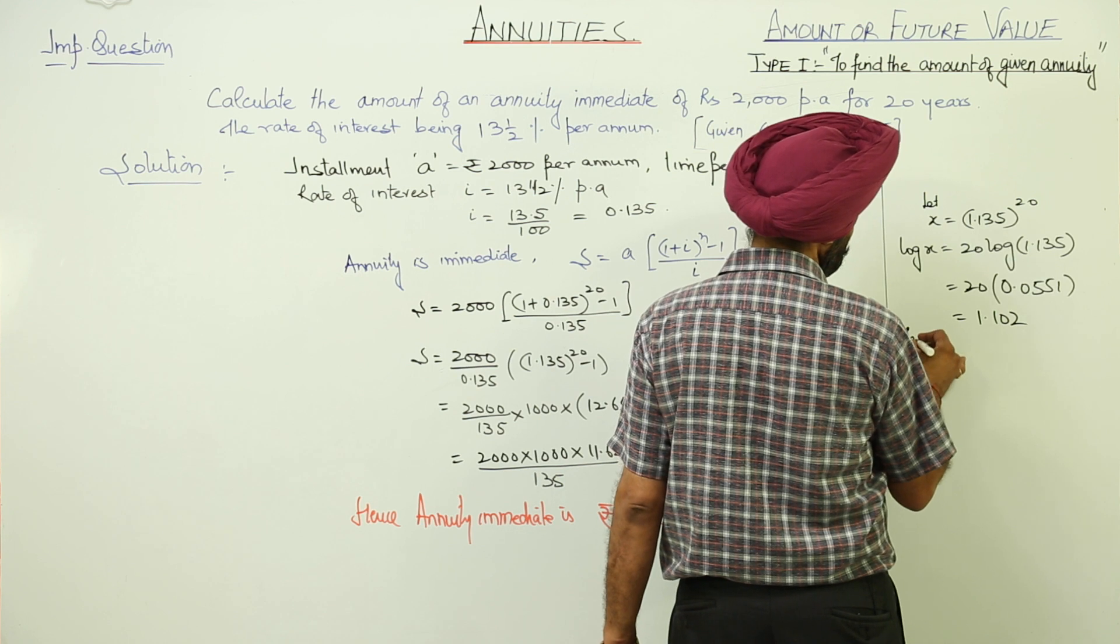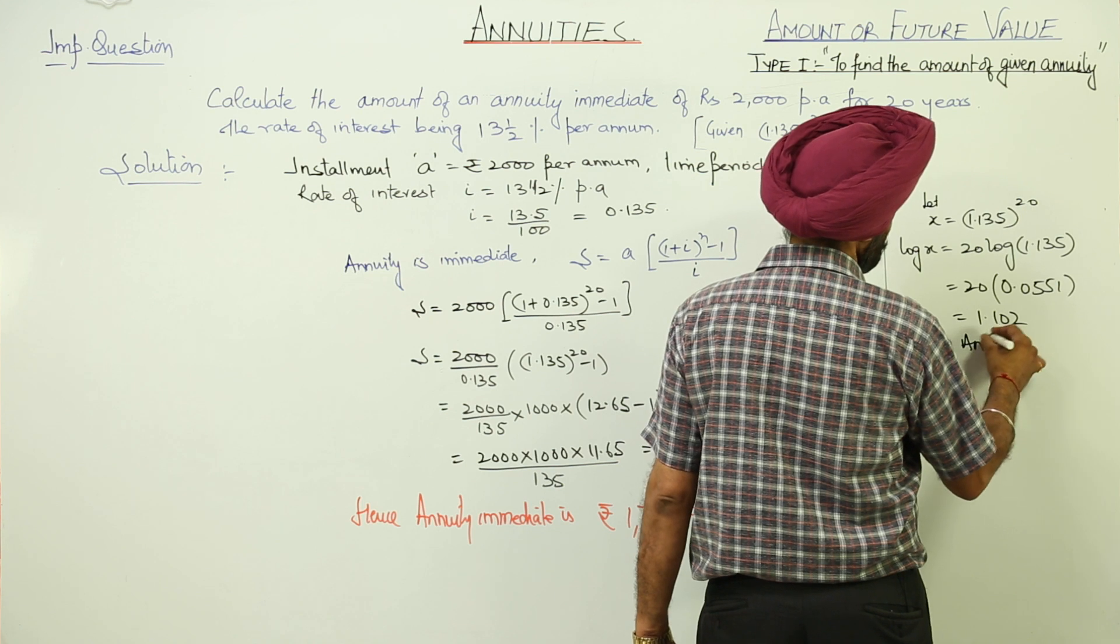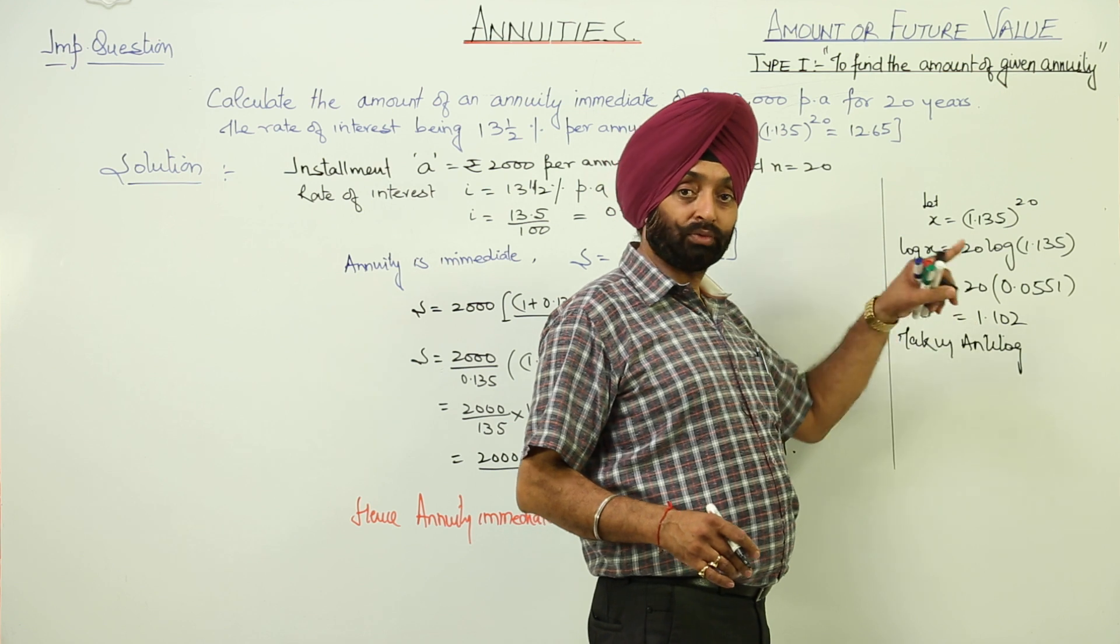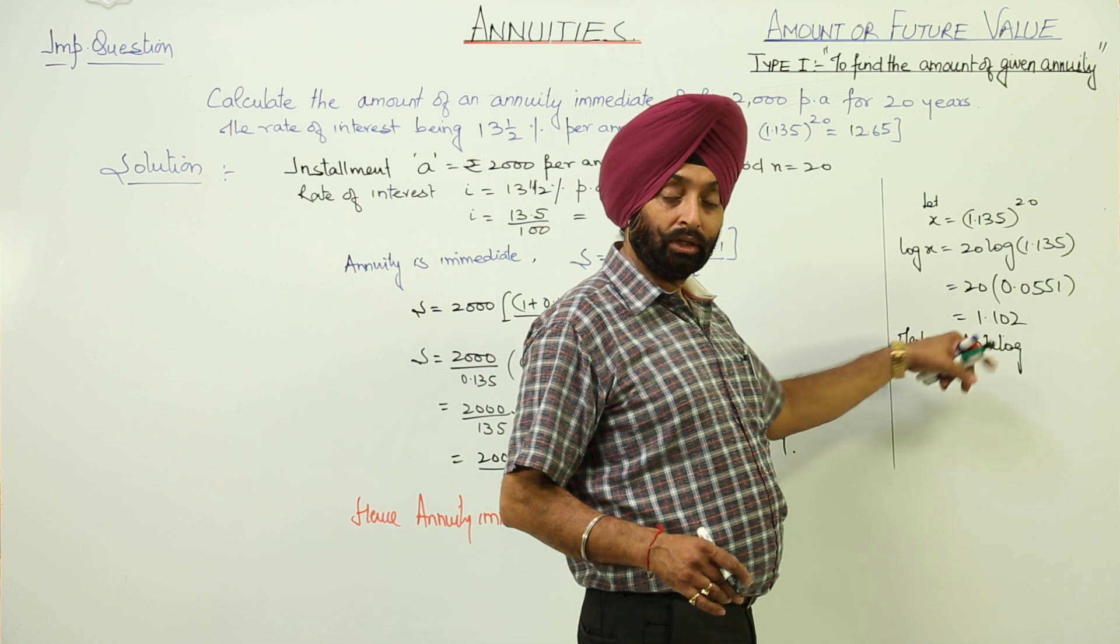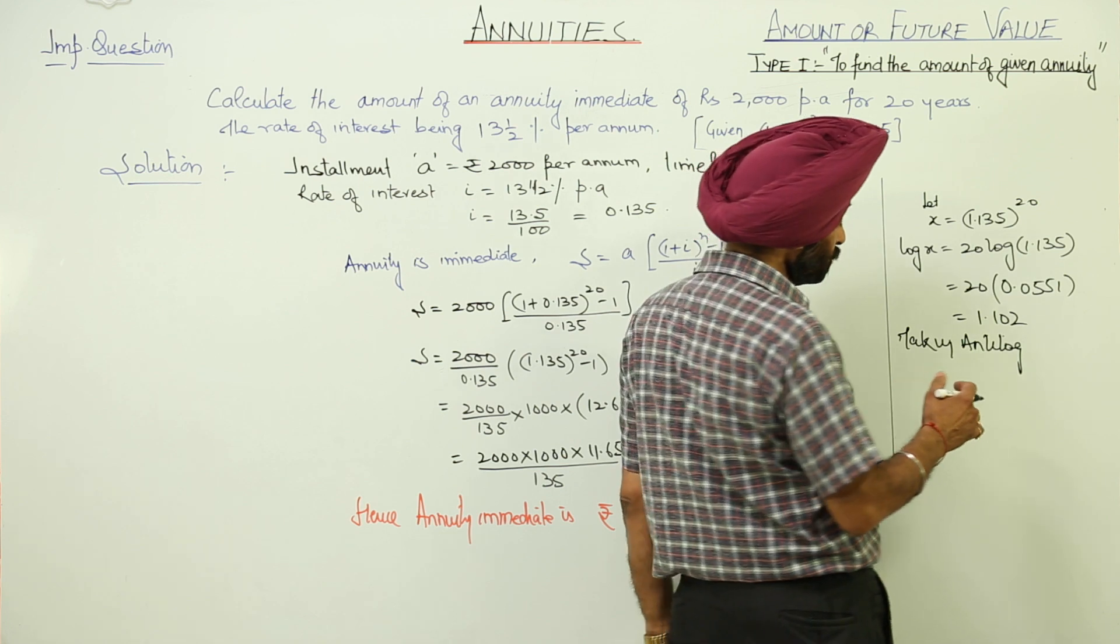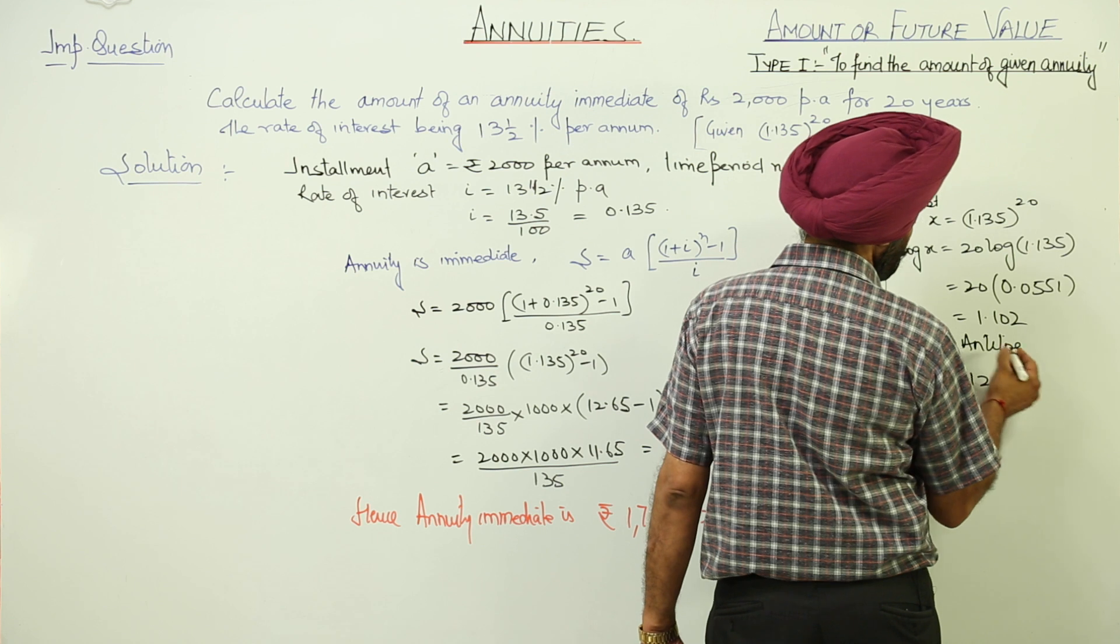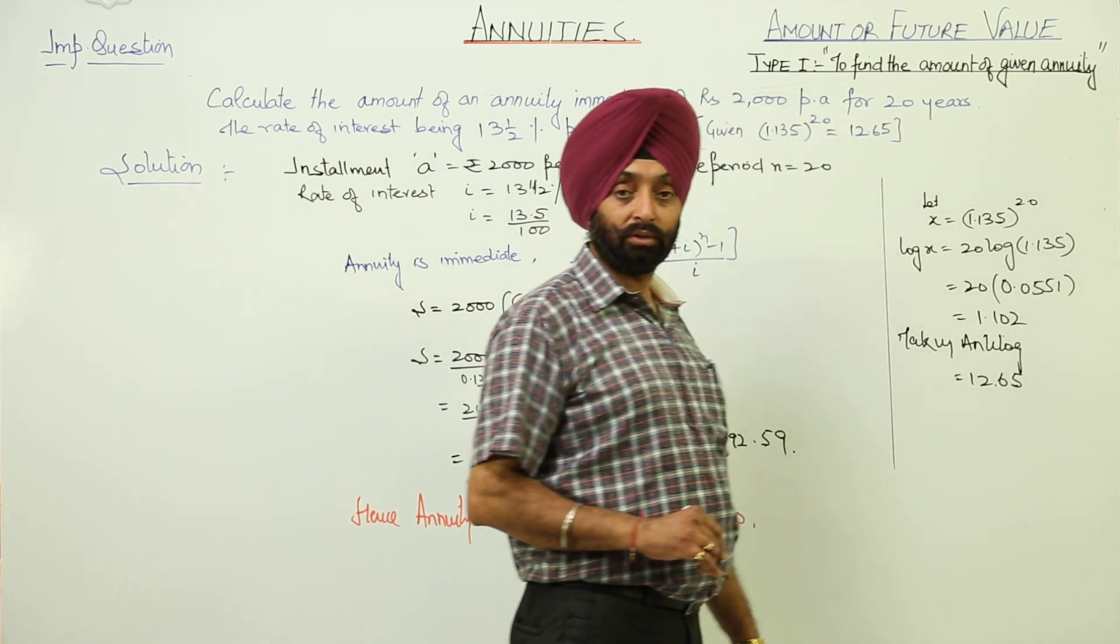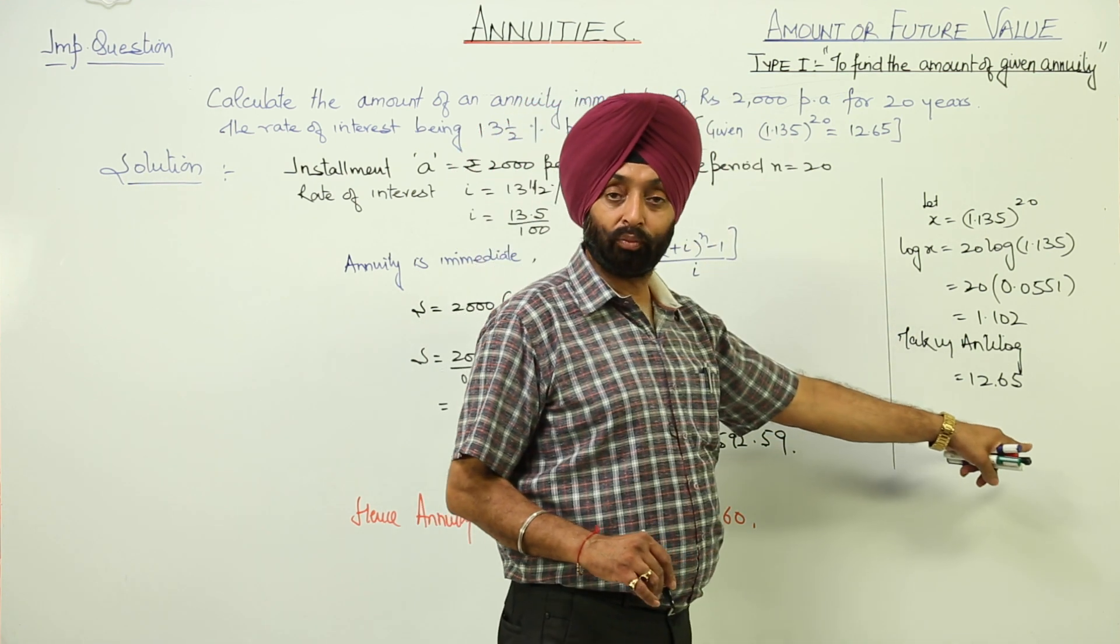Taking antilog. Antilog is always after decimal. Here we are having 1, so if point starts from here, first of all we are just checking at after decimal 10 and 2, and we will be having this as 1265 and here it is 1. Decimal will be after 2. Like this we are getting 1.135 raise to power 20 is 12.65.